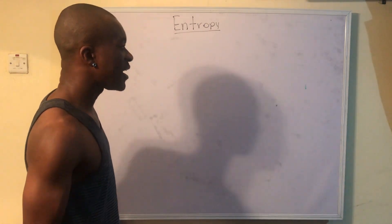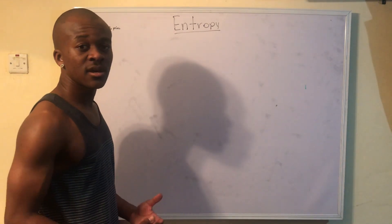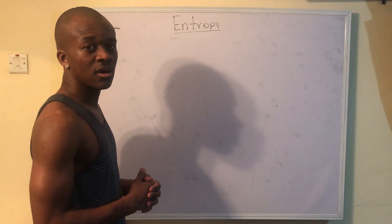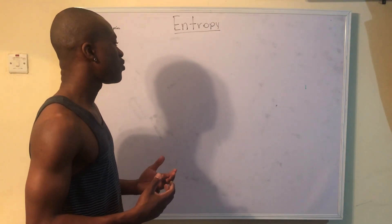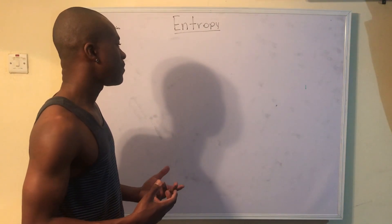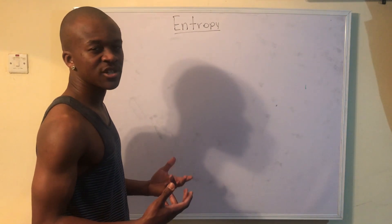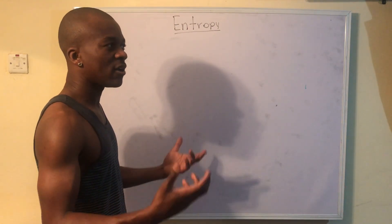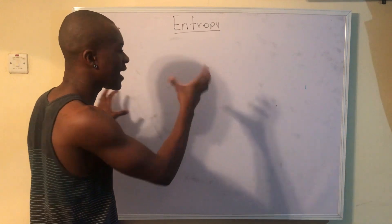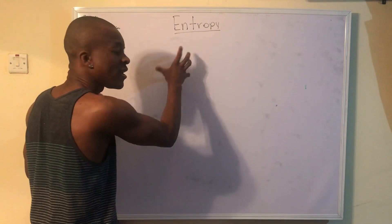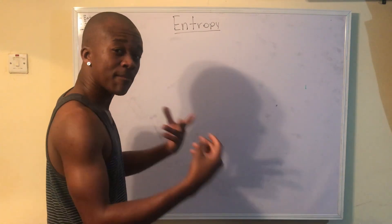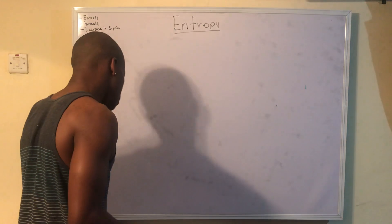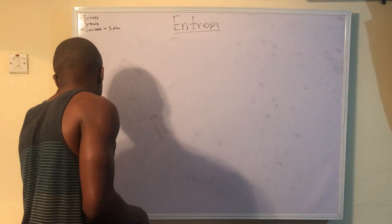You can define entropy as the measure of disorderliness in a system. Entropy is measured in kilojoules per Kelvin, and I sort of look at it as the level of energy that the molecules have per degree.